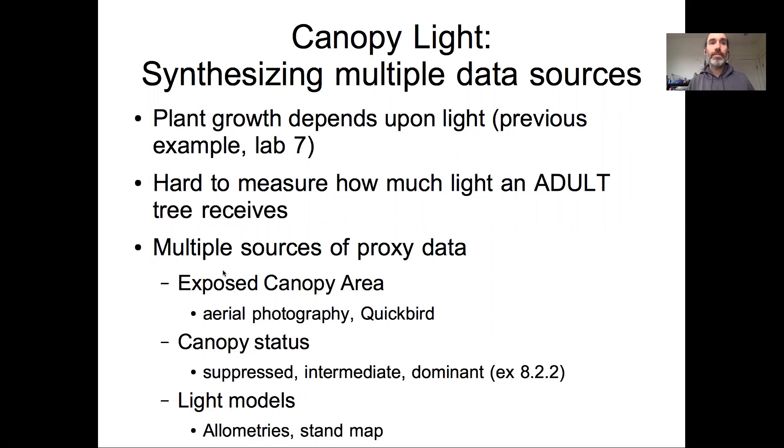In this case, we're going to rely on remote sensing estimates of canopy area coming from aerial photography. We can use field measurements of canopy status, such as whether an individual is suppressed, an understory, intermediate, or dominant in the canopy. And then we can use mechanistic light models, in this case using the allometric models that we explored in a previous example and a map of where the trees were in the forest to draw three-dimensional trees and pass light through them.